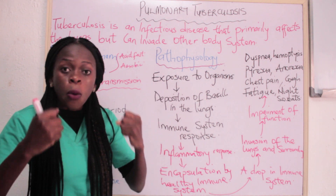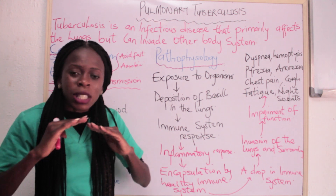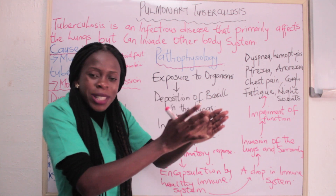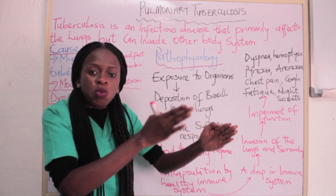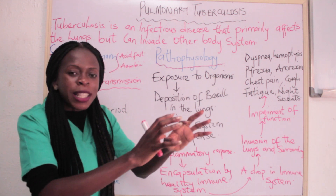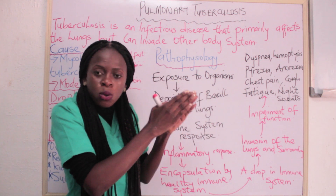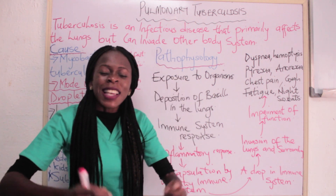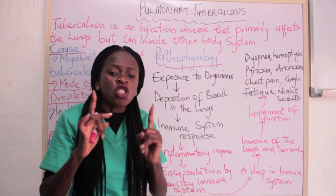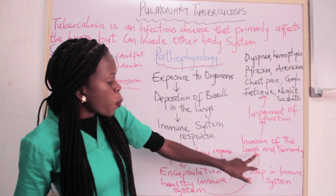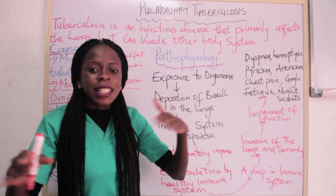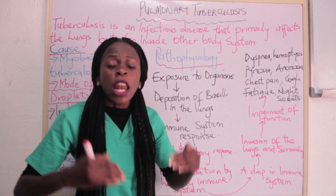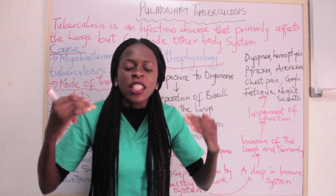If the person has a healthy immune system, the bacilli will be encapsulated — kept contained. It will not cause the signs and symptoms associated with pulmonary tuberculosis. The region in the lungs where that encapsulation takes place is known as the primary focus. But if there is a drop in immunity or the individual's immune system is not strong enough, there will be invasion of the lung and surrounding tissues, and the lymphatic system will also move to do its work, resulting in impairment of lung function.